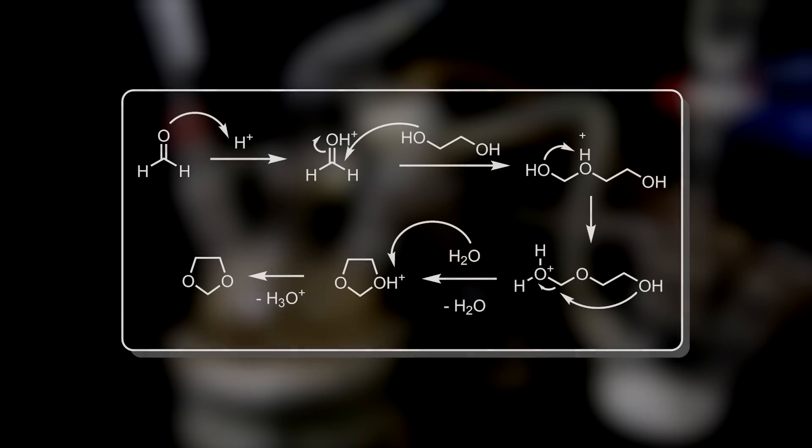When we have free formaldehyde, it is protonated by the acid, and the resulting oxycarbonium carbon undergoes nucleophilic attack from the hydroxyl of ethylene glycol. In the resulting protonated intermediate, the proton moves from the ether to the nearest hydroxyl, as that is more favorable.